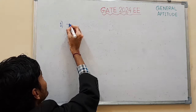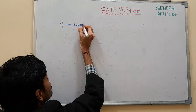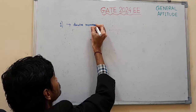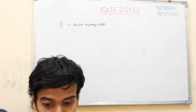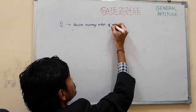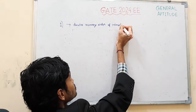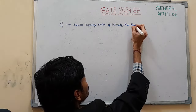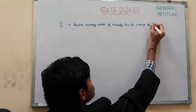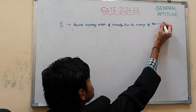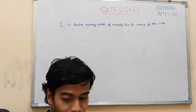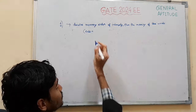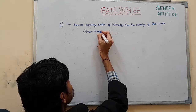Question No. 1 — these arrows denote increasing order of intensity. Then the meaning of the words: Talk, Shout, Scream. This is given as an example where Talk, Shout, Scream are arranged in increasing order of intensity.